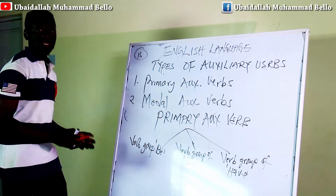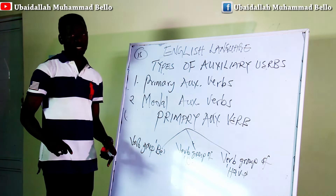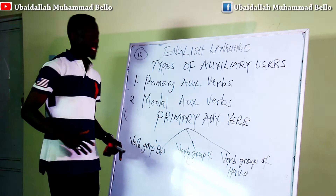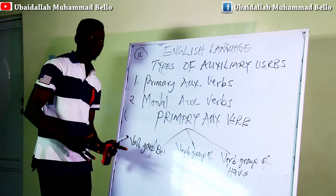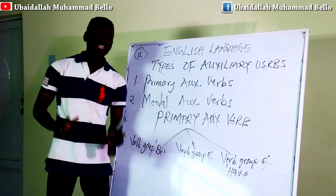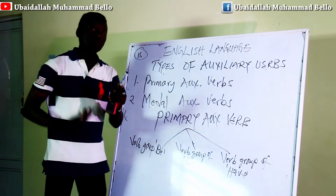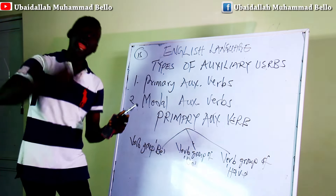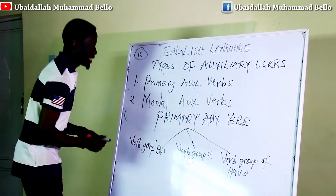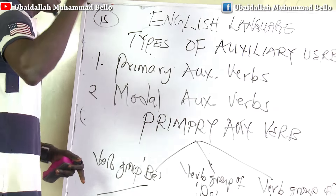The verb group of BE has eight items, and they are also called auxiliary verbs. This classification of primary auxiliary verbs gives you a focus on what they are and what items fall under each one. The BE group has eight items.